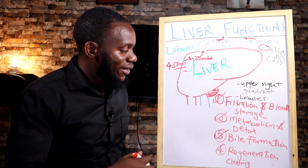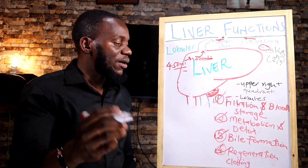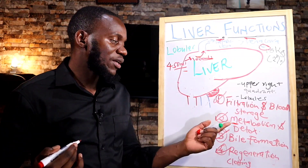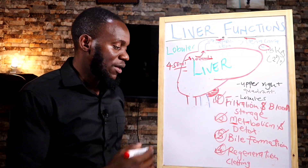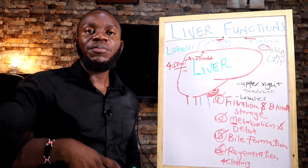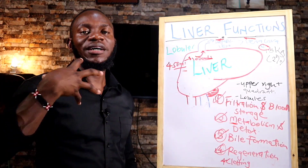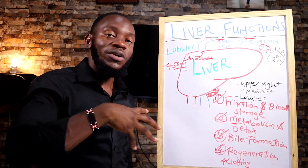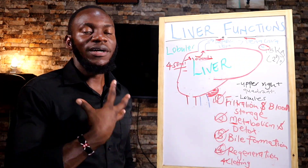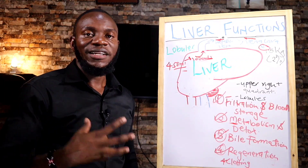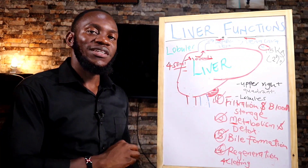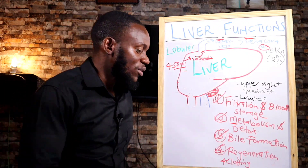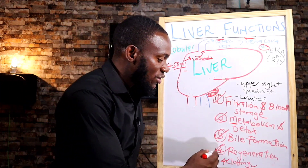Bile just sequesters or emulsifies fat and makes it more soluble so you can absorb it into the lymphatic system. The misconception that drinking a glass of warm water after a fatty meal helps dissolve the fat is wrong — fat is not soluble in water. It requires bile. So save that glass of water and just eat your fatty meat, specifically high animal fat meat.